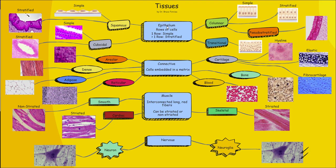If we begin with epithelium, the soundbite there to describe it: it consists of rows of cells usually covering something. The covering can be either thin or one row of cells, which would be simple, or greater than one row, which would be stratified. The thinnest, squished cells are squamous cells. So you would have simple squamous — that's one row of squamous cells — or stratified squamous, which would be like the superficial layer of the skin.